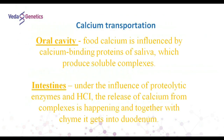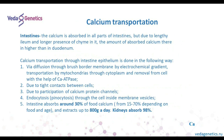With food, calcium first gets to the mouth, where saliva is first to react. In the mouth, food calcium is exposed to the action of calcium-binding proteins of saliva, which form a soluble complex with it. In the abdomen, under the influence of enzymes, calcium gets released and in ionized form enters the duodenum. Calcium absorption flows throughout the length of the intestine, but due to the greater length of the small intestine and a longer stay of chyme there, the amount of absorbed calcium in it is higher than in the duodenum.